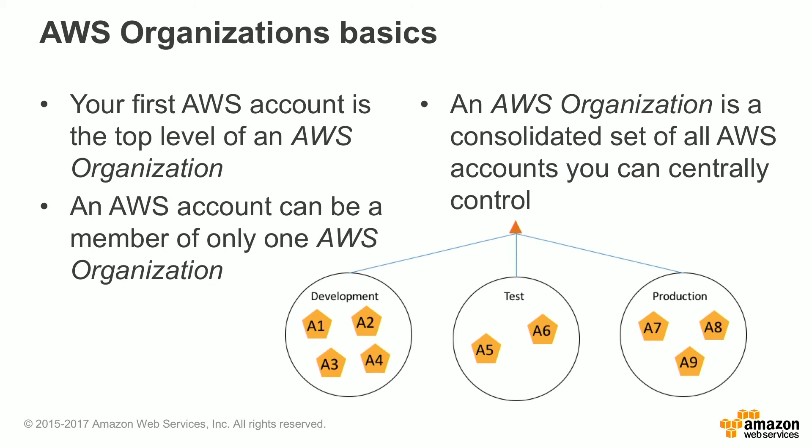AWS Organizations Basics. The first AWS account is the top level of an AWS organization. An AWS account can be a member of only one AWS organization. An AWS organization is a consolidated set of all the AWS accounts that you can centrally control.